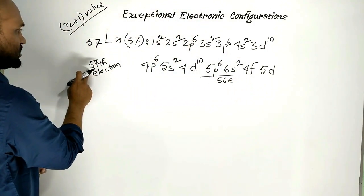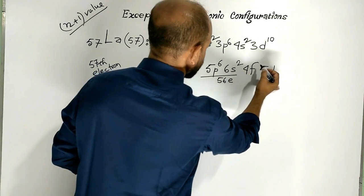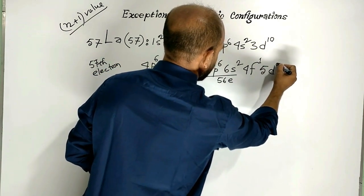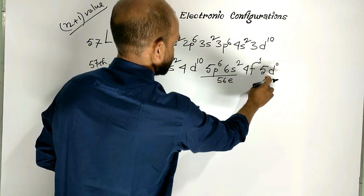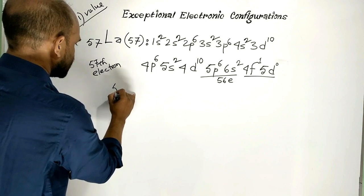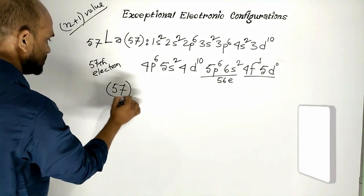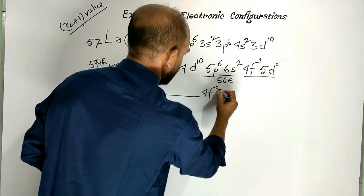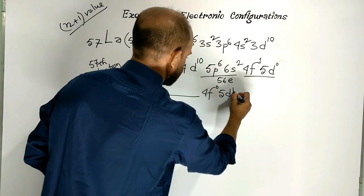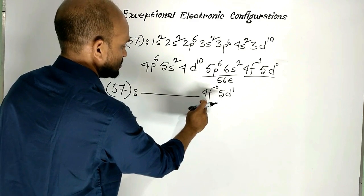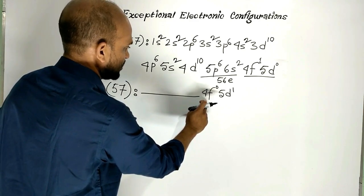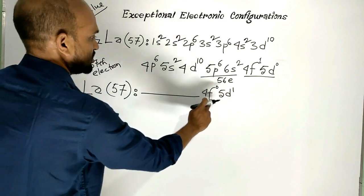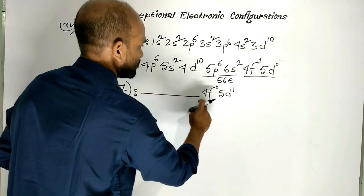The 57th electron is supposed to enter the 4f orbital, and the 5d orbital should be vacant. But actually, the electronic configuration is 4f⁰, 5d¹. That is, the 57th electron doesn't enter the 4f orbital; rather, it enters the 5d orbital. The configuration is 4f⁰, 5d¹.